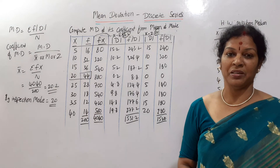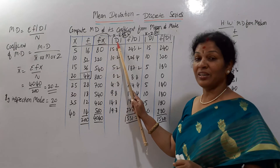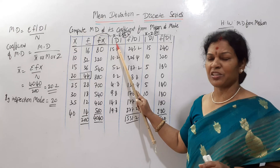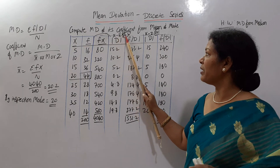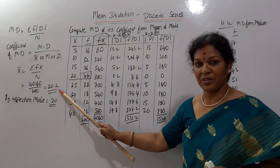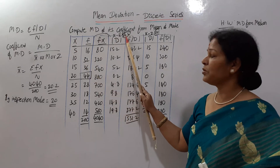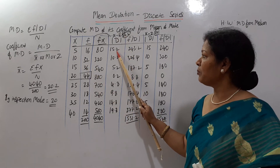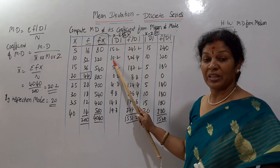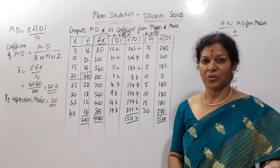Now we can take deviations from x-bar. I have provided a column for mod d, where mod d means x minus x-bar. x-bar is 20.2. So: 5 minus 20.2 = 15.2, 10 minus 20.2 = 10.2, and like this we have calculated mod d for each value.